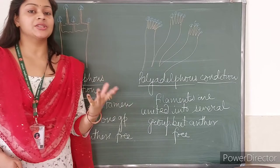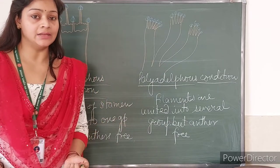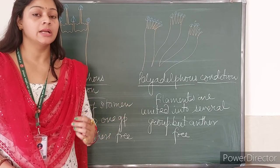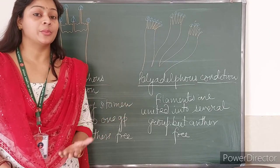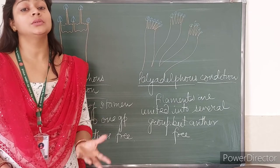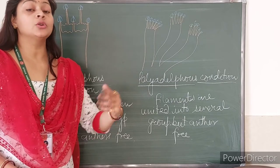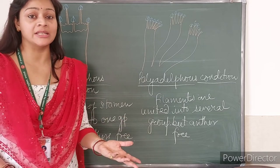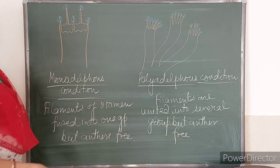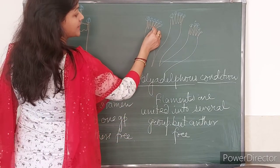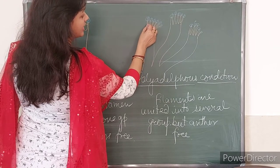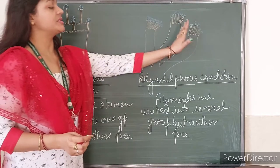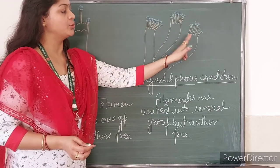In Monadelphous condition, filaments are fused into one group. In Polyadelphous condition, filaments are fused together and there is formation of more than one group or two groups — there are several groups. Here, the total number of the stamens is 5+5+10, arranged in 5-5 groups.